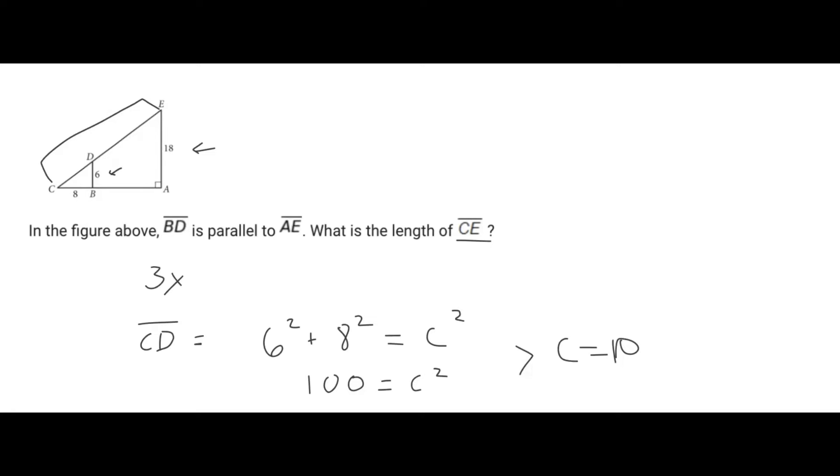So in our case C would just be the side length of side CD. And because we know the scale factor is three, we would have to apply the scale factor to our value of 10. So ultimately our final answer for the length of side CE would be 3 times 10 which would be 30.